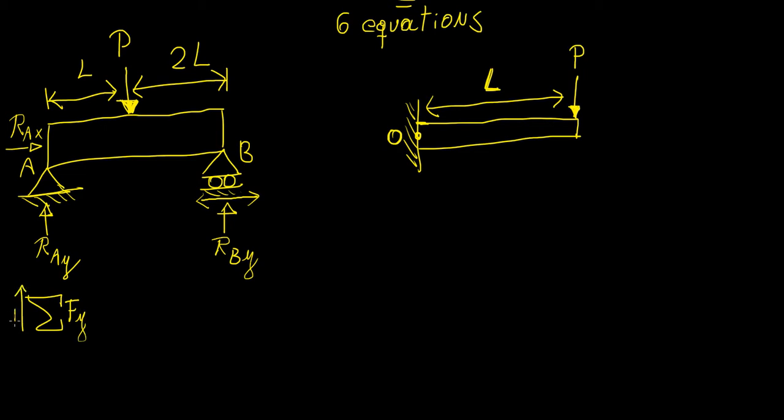We only need to take the sum of the forces in the y direction, which should equal zero if this thing is to remain in static equilibrium. We have one force going down, minus P, and we have RAy plus RBy. So that means RAy plus RBy are going to equal P. We have two unknowns, so we need an extra equation.